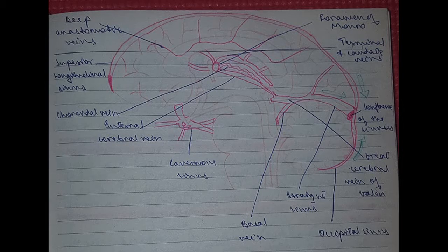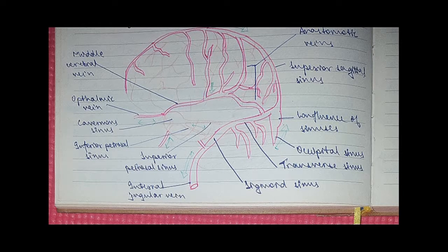Now you can see the sinuses that we have mentioned here. You've got the superior longitudinal sinus and the occipital sinus. Those two and the straight sinus drain into the confluence of the sinuses which is what I told you is where the sinuses merge. Now from here, from the confluence of the sinuses, you also have the superior sagittal sinus emptying there.